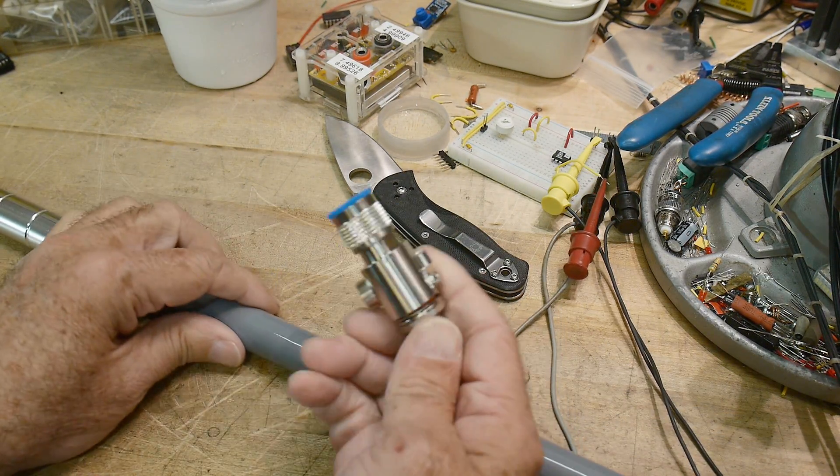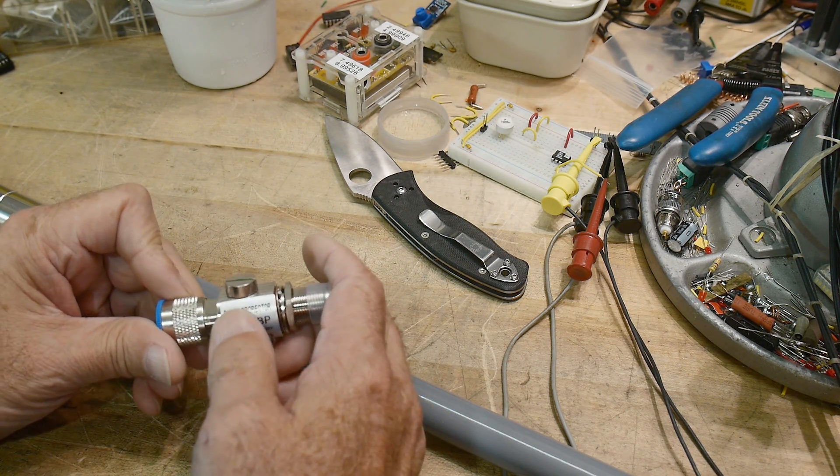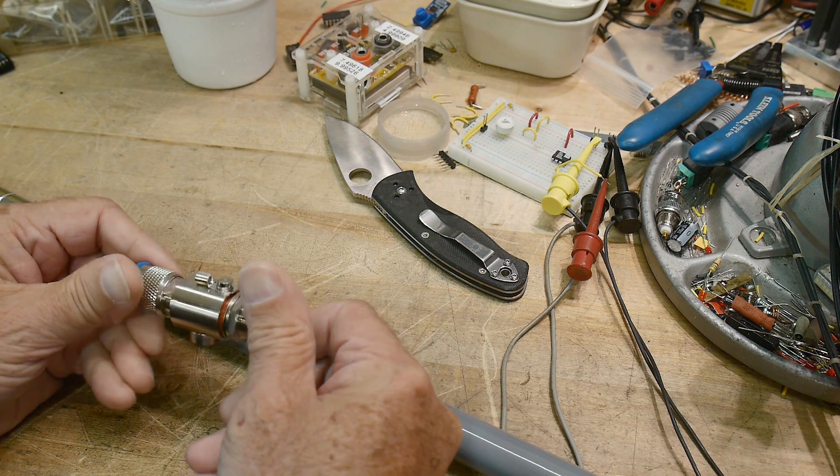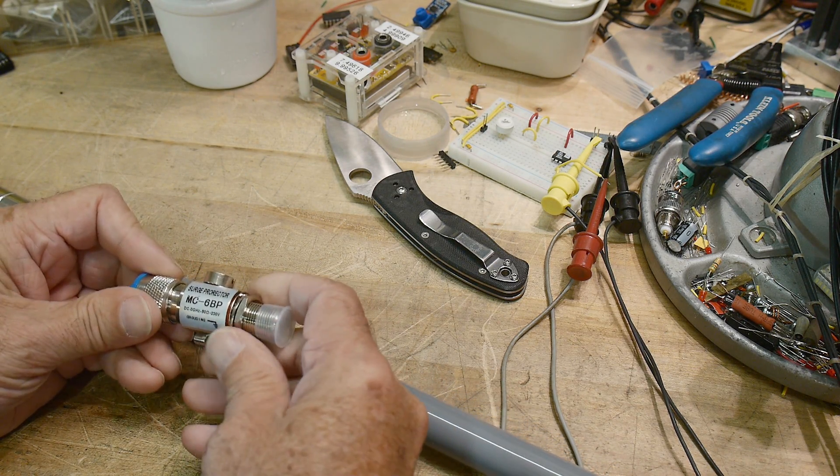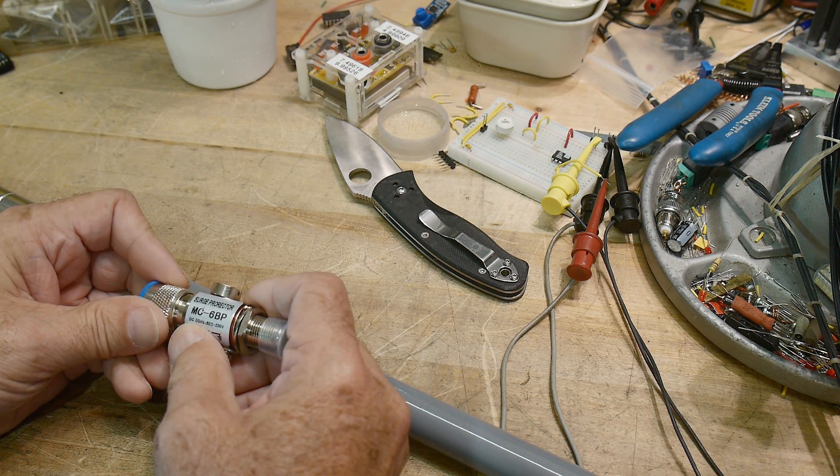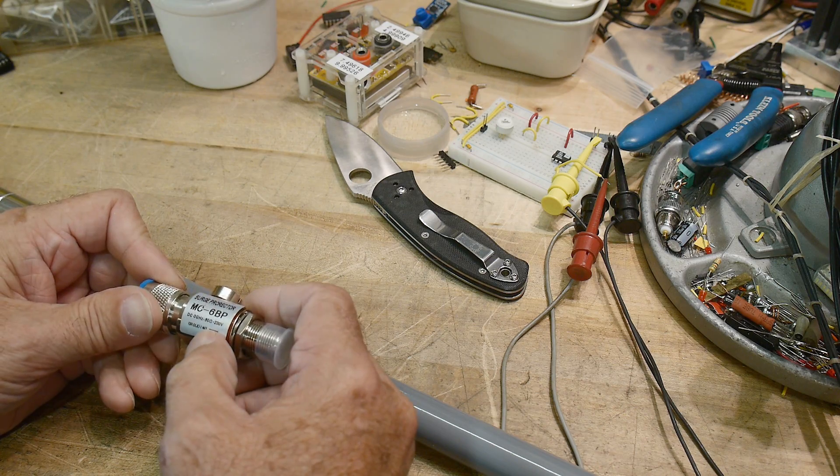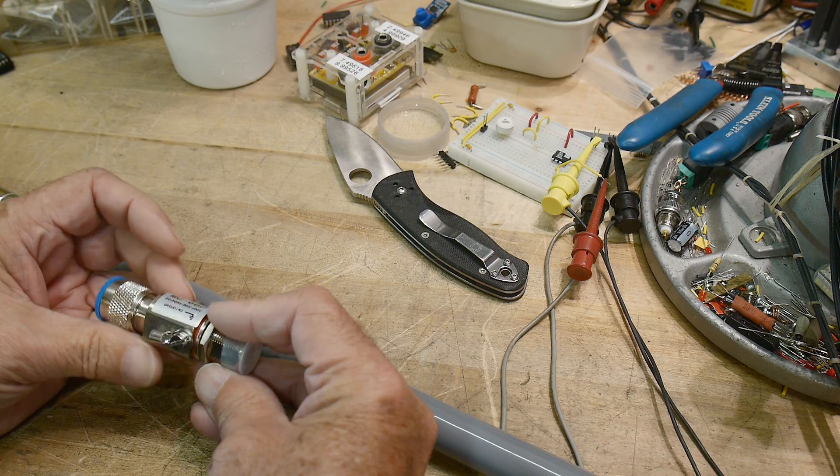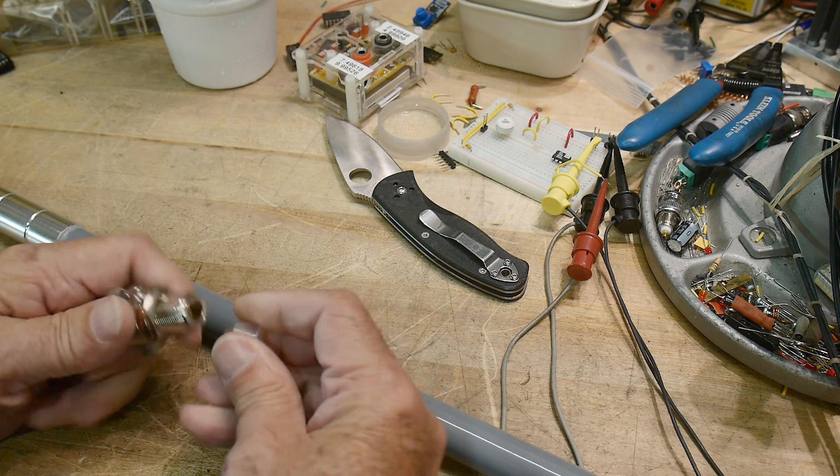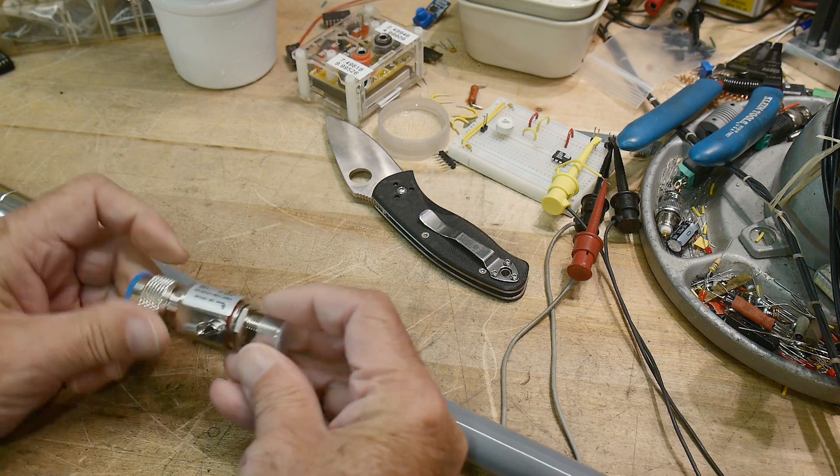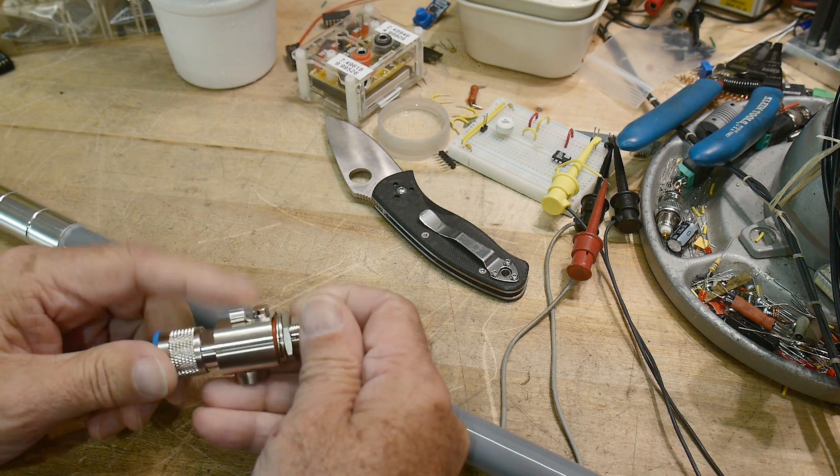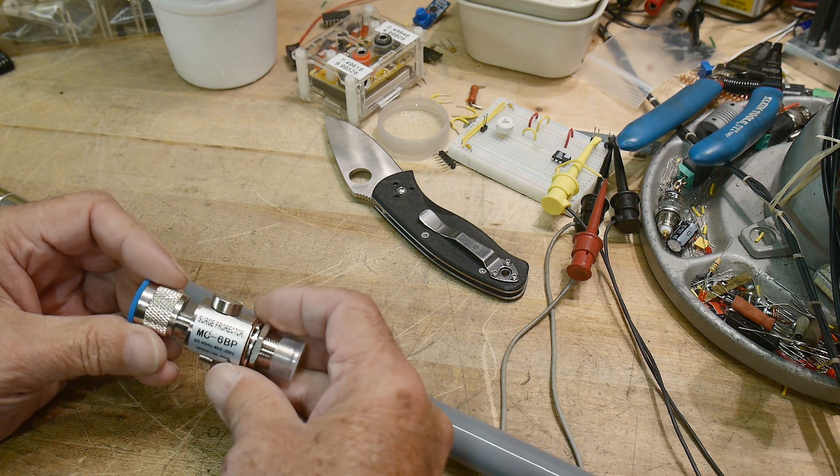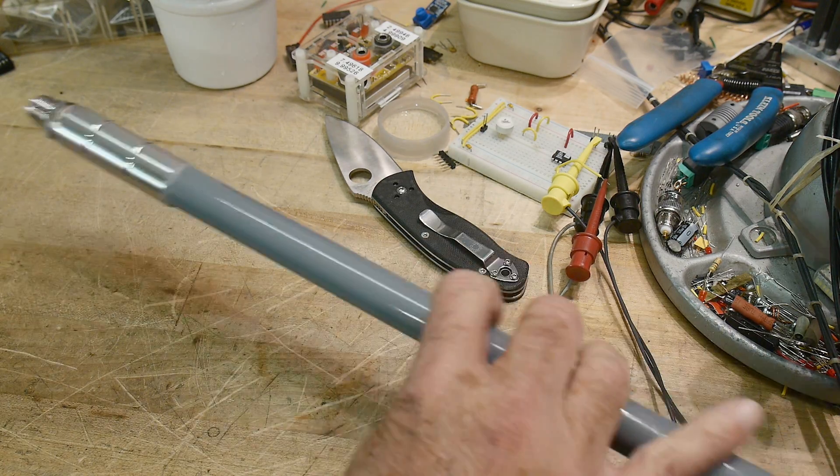I was really surprised to see this in the package - it comes with a lightning arrester, they call it a surge protector. It's N connector to N connector. It says DC to 3 gigahertz, 50 ohms, 230 volts - so it starts conducting I guess at 230 volts and bleeds any charge off to protect your radio. There's an antenna earth ground you put here and there's probably a spark gap or something in there that allows it to capture those events.